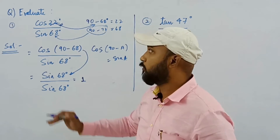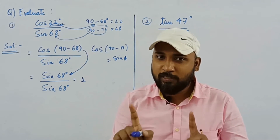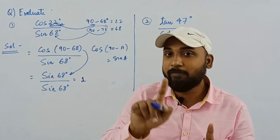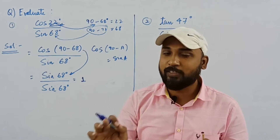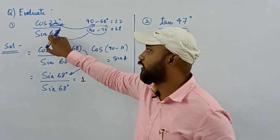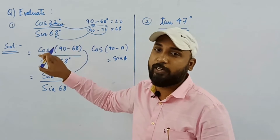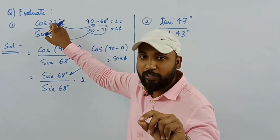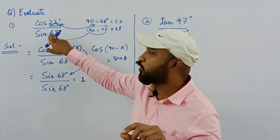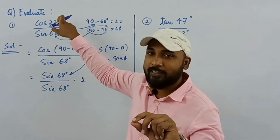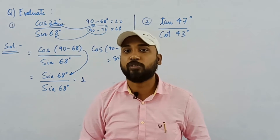Remember one more thing: when you see these angles, always think about what 90 minus that angle equals. For example, 90 minus 22 is 68, which is the other angle given here. You will always get such a complementary angle relation, so look for those relations.